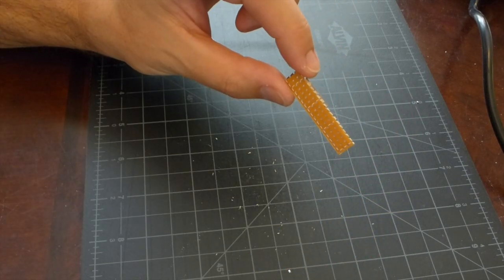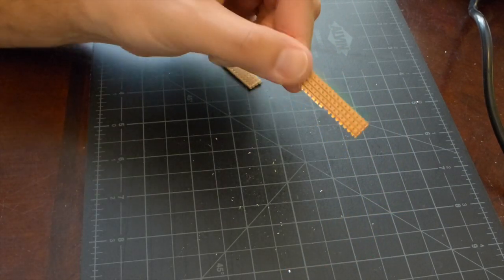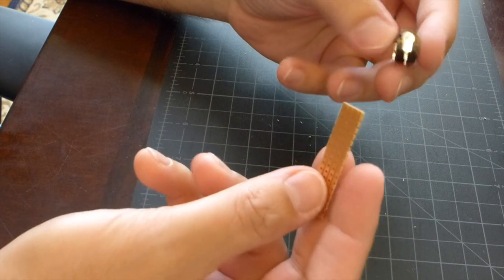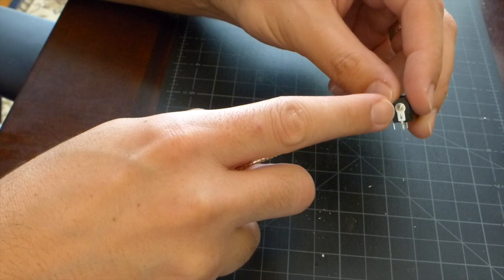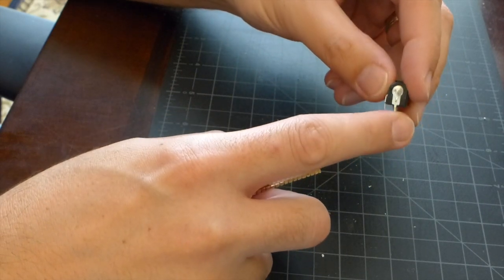And here we have the perfect size board for our project. Now I'm going to take the DC jack and connect it to the stripboard. On this jack, the pin on the back is positive and the center pin is negative.